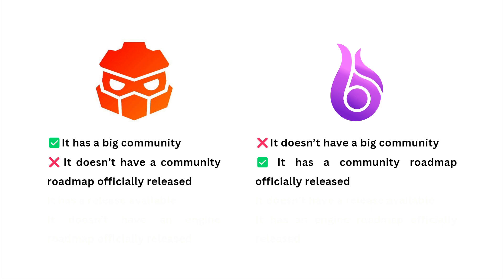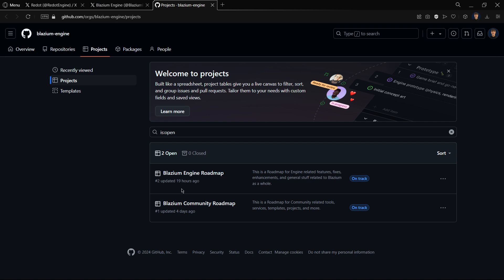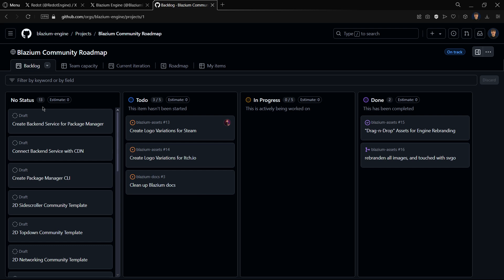But Blasium has. Both have the same mission of creating a community-driven and open-source project, of course. But having this community roadmap makes things a little bit more transparent and clearer for people, because we know the step-by-step process that the engine will have. This is stated in the X account. If we go to the engine and community roadmap section, we find here the Blasium community roadmap. If we click over here, we will find an amazing board with all the things related to community.